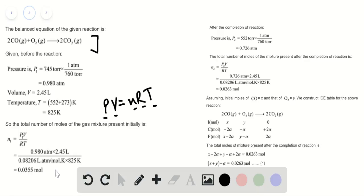Substituting in the values, we have a number of moles equal to 0.0355 moles. After the completion of reaction, we have a new pressure, P2 equals 0.726 atmospheres. Again applying the ideal gas equation, we have a new number of moles which is 0.0263 moles.